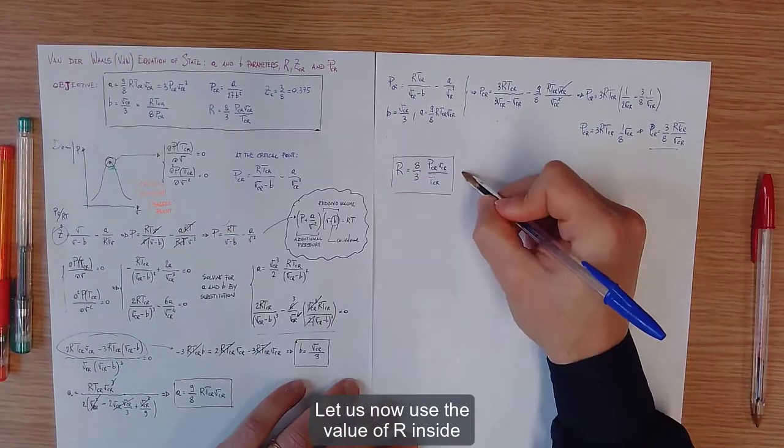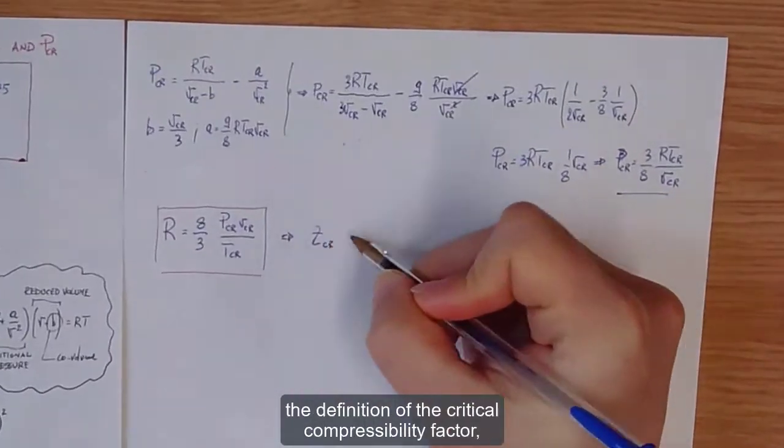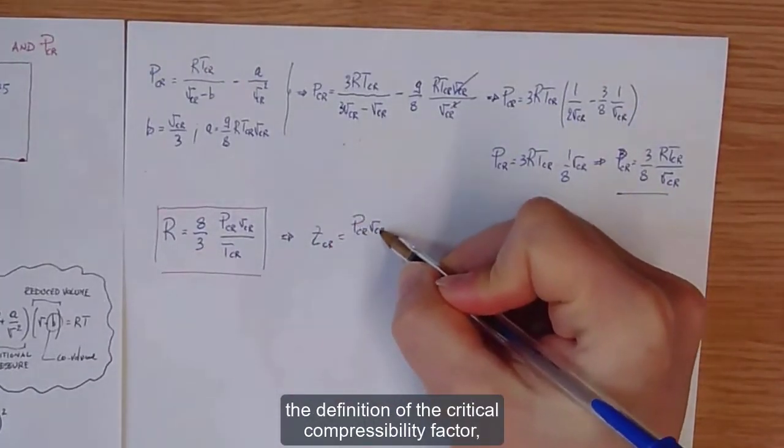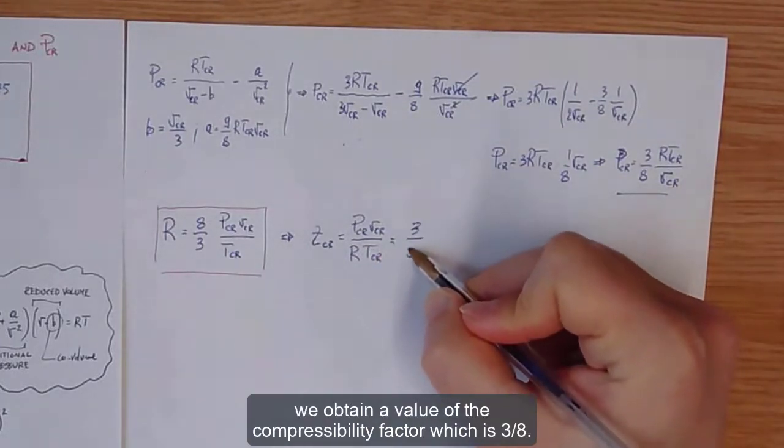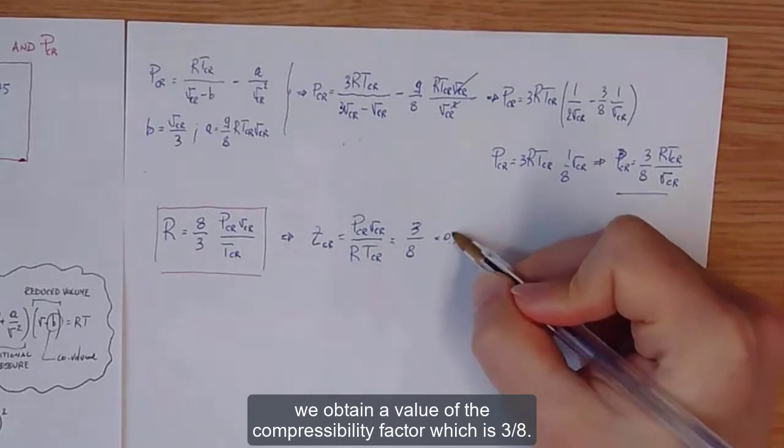Let us now use the value of R inside the definition of the critical compressibility factor. We obtain a value of the compressibility factor, which is 3/8.